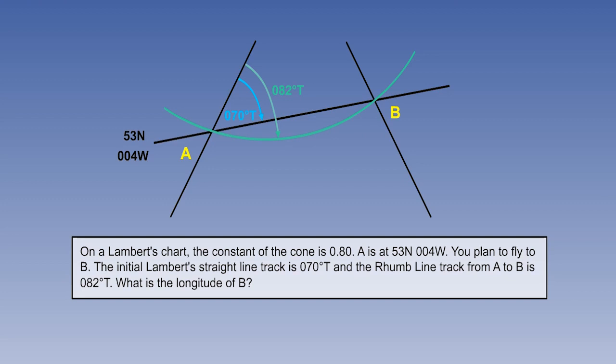You treat these types of problem exactly as you would a conversion angle problem on the earth, except that because it's a Lambert's chart, you are considering the straight line, not the great circle. If the straight line track is 070 and the rhumb line track is 082, then the angle between them is 12 degrees. This is half the chart convergence.